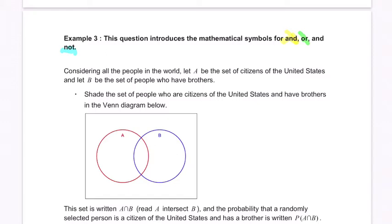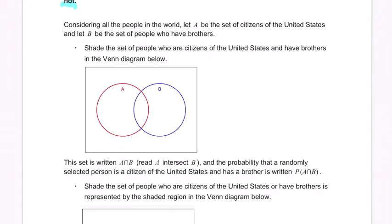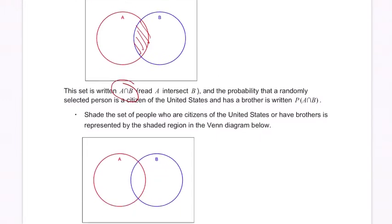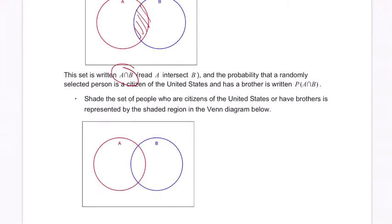Let's go through that. Consider all the people in the world. Let A be the citizens of the United States and let B be the set of people who have brothers. We have this table here: citizens of the United States and brothers. Shade the set of people who are citizens of the United States and have brothers.